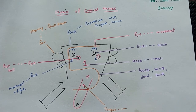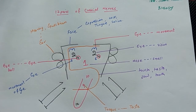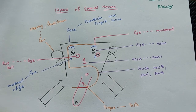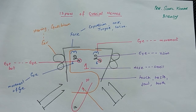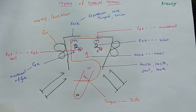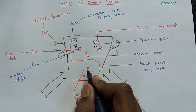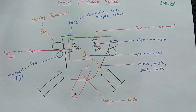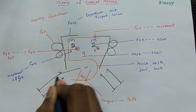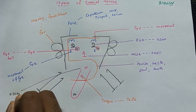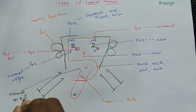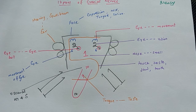Number nine is written on the tongue, so its function is related to taste and, to some extent, saliva secretion — this is the glossopharyngeal nerve. Number ten is the vagus nerve, written here on the diagram. Its function covers visceral sensation and visceral movement — all the important internal sensations and movements.